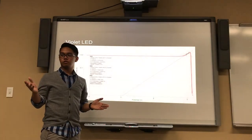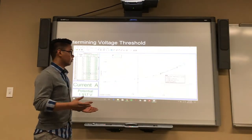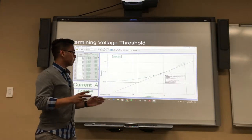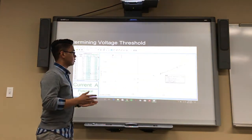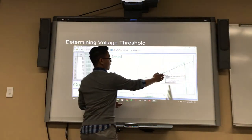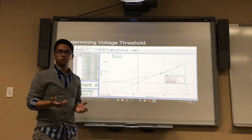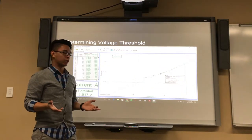So to find the voltage threshold, what we had to do was find the most linear part. This specifically is an example from one of our yellow LEDs. As you can see from between these two black brackets here we assume that to be our closest to the most linear part of our graph.